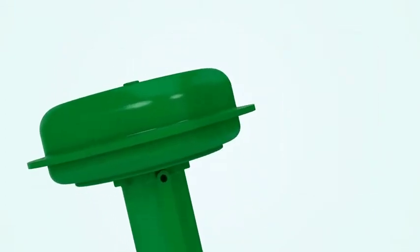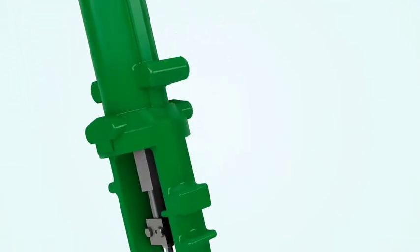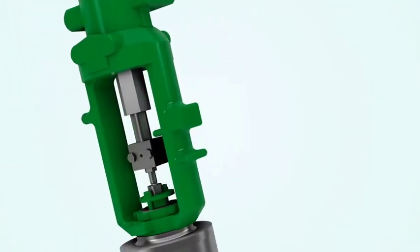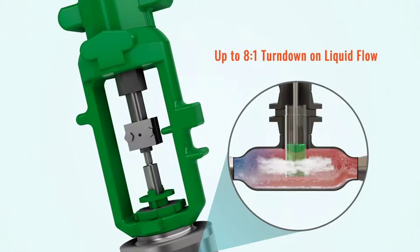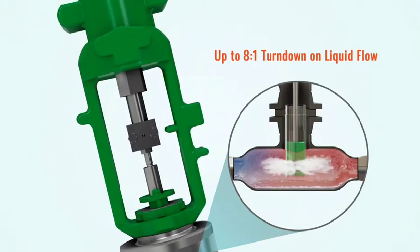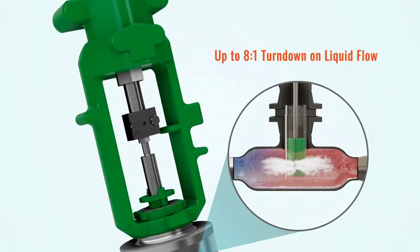Most process heaters are limited to a 2-to-1 turndown on liquid flow rate. The Prosonix heater can operate up to an 8-to-1 turndown. This additional range means you can operate your processes at optimum conditions.